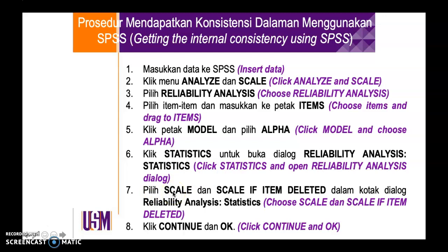Then, what you need to do is choose Scale and Scale if Item Deleted, and then click Continue and OK. It is important to choose Scale if Item Deleted because it allows you to identify from the output which items are the most problematic, and what happens to the Cronbach's alpha value if that particular item is deleted. From the output, the Scale if Item Deleted analysis shows the problematic items and the effect on the Cronbach's alpha value if you delete a particular item.